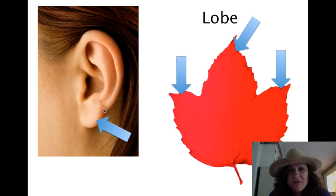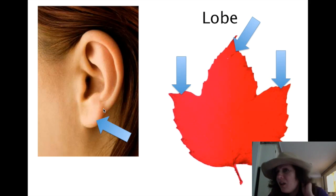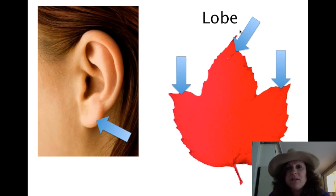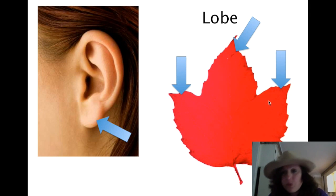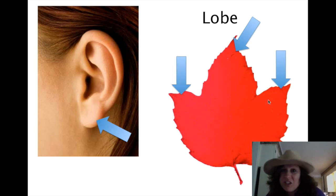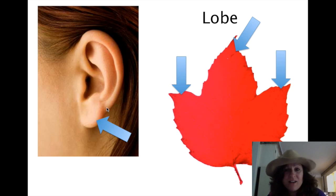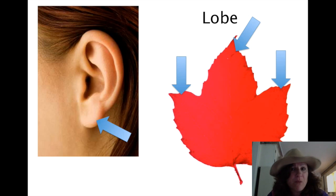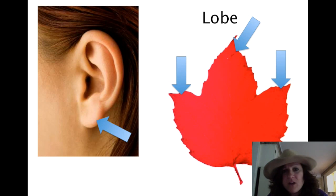Lobe. We have ear lobes, right? Well, leaves have lobes too. This red maple — one, two, three — it has three lobes. Not too hard, huh? We can do this stuff! And remember, pause the video anytime you want and take notes.